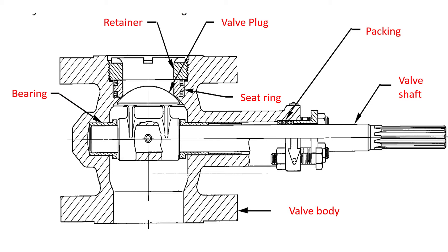You can see that the components available in the sliding stem control valve are also included in the rotary shaft valve, though there are some different components. The valve body is the fluid boundary and the pressure-containing component — this is where the process fluid, which has pressure, temperature, and chemical properties, enters. This is called the trim, which refers to the process fluid interacting with the internal components of the control valve body.